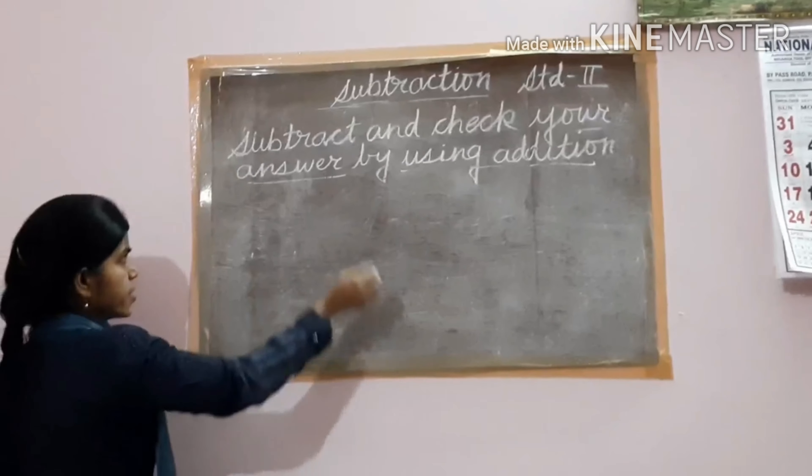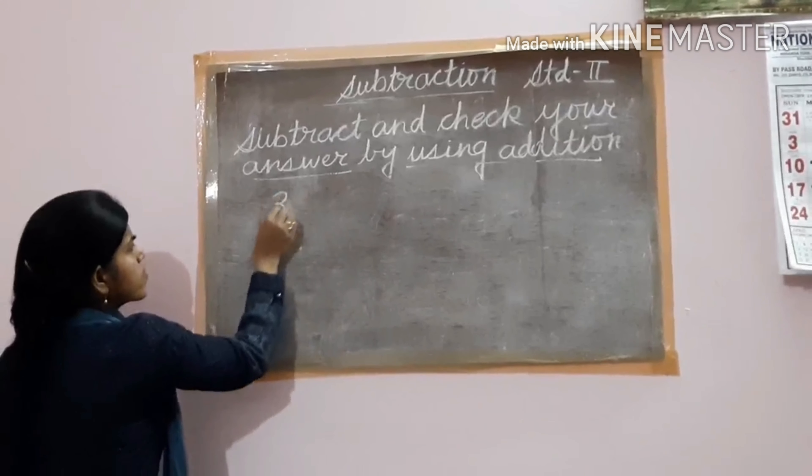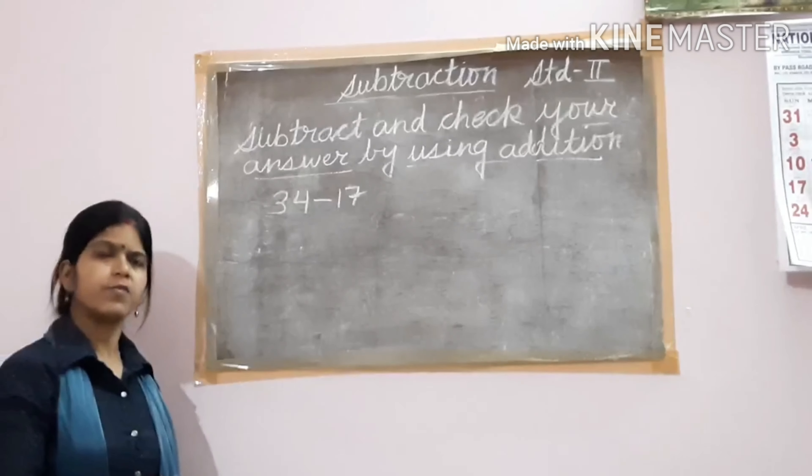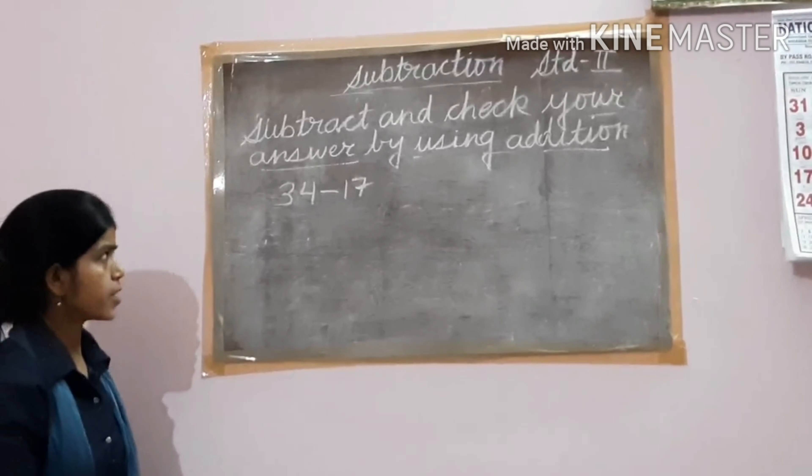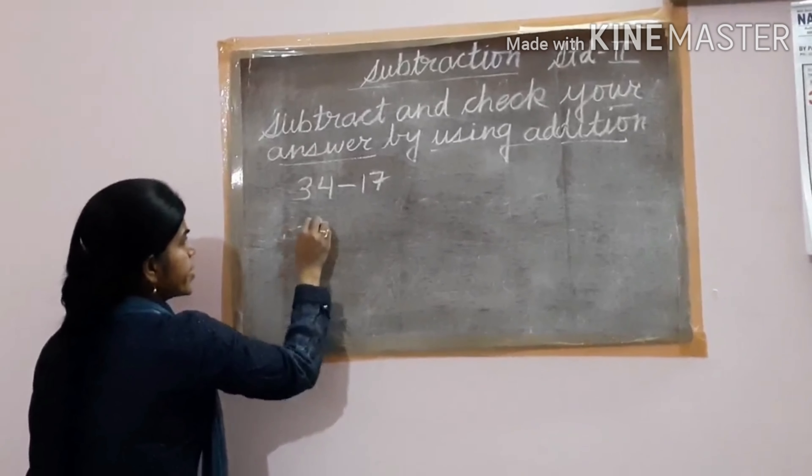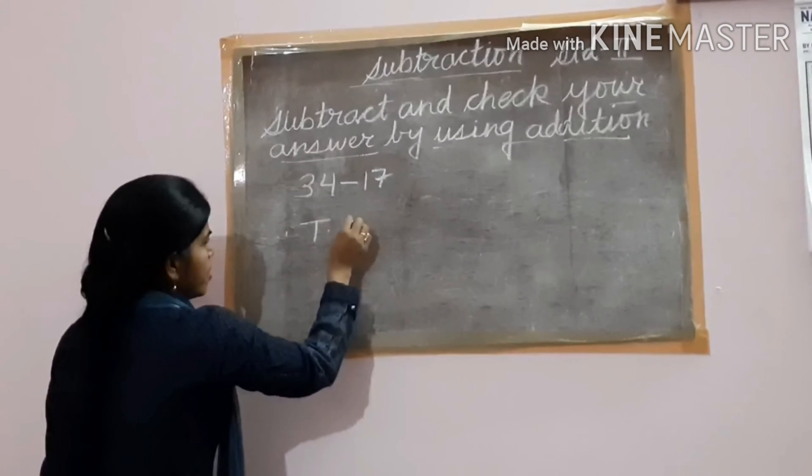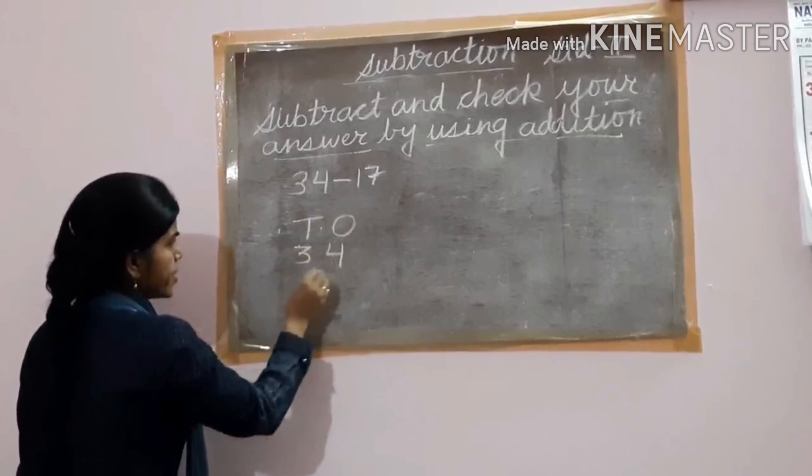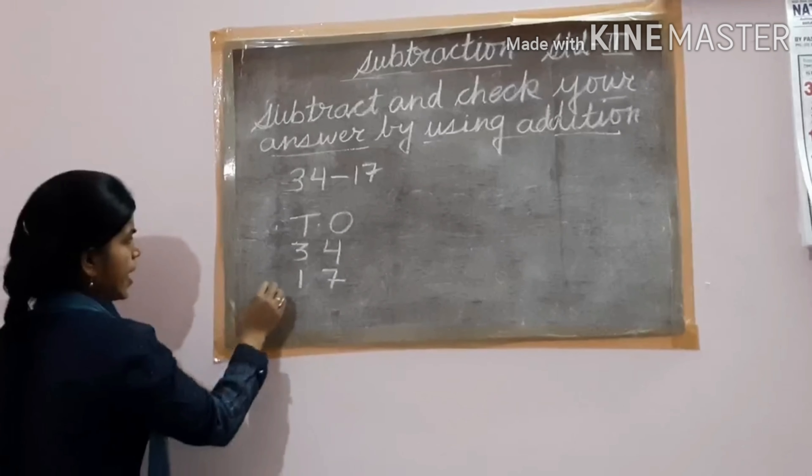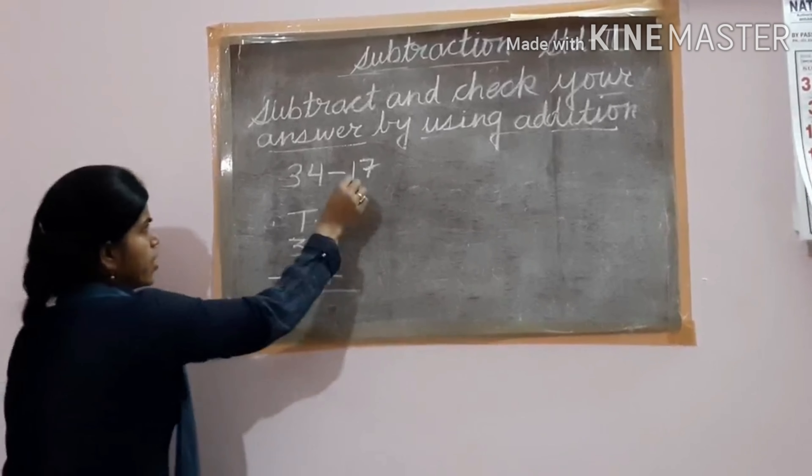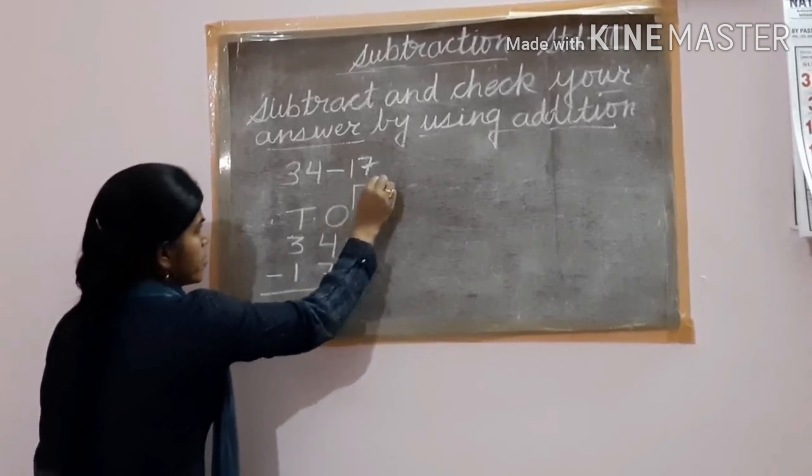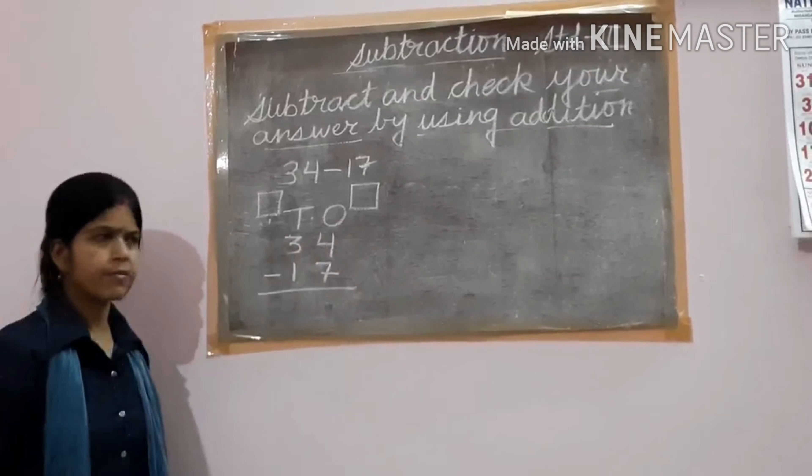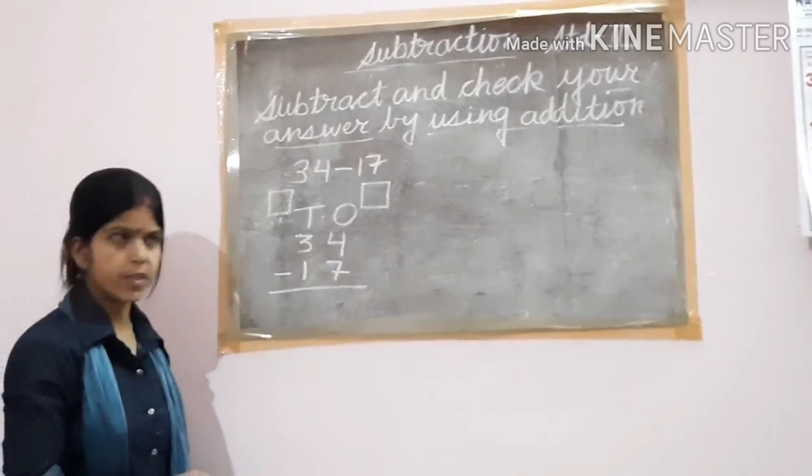If the question is 34 minus 17, how to do subtraction and afterwards check whether it is correct or not? First, you arrange at the proper place. 34: 3 tens, 4 ones. 17: 1 ten, 7 ones, and then sign of subtraction. Now here, 4 ones minus 7 ones, not possible.